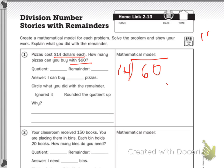I'm going to list my multiples of 14. So 14, 28, 42, 56, and then 70.